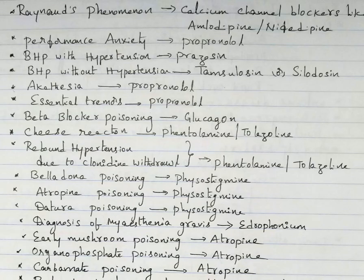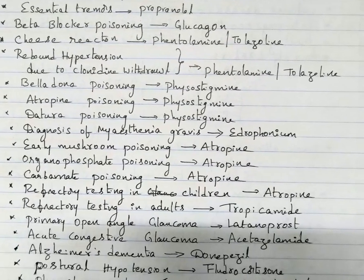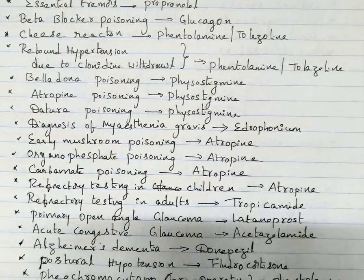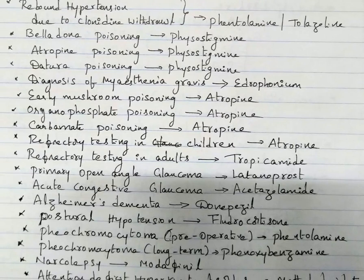For diagnosis of myasthenia gravis, we give edrophonium (the edrophonium test). For treatment of myasthenia gravis, we give pyridostigmine, which is an acetylcholinesterase inhibitor. For diagnosis of myasthenia gravis, we give edrophonium.